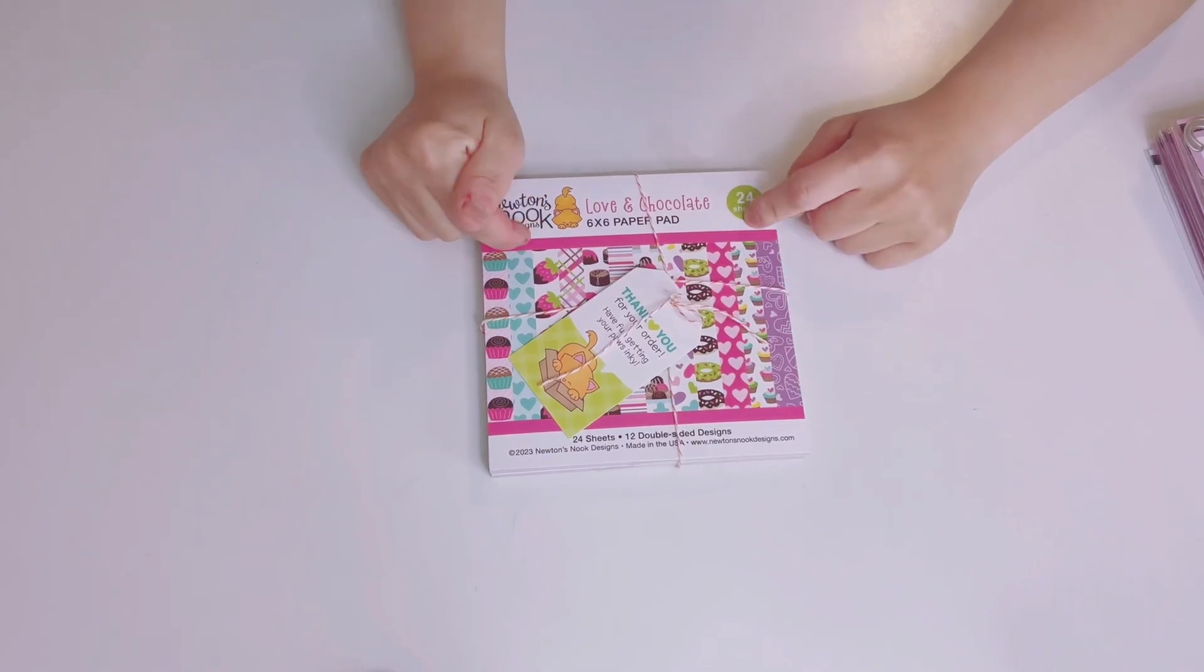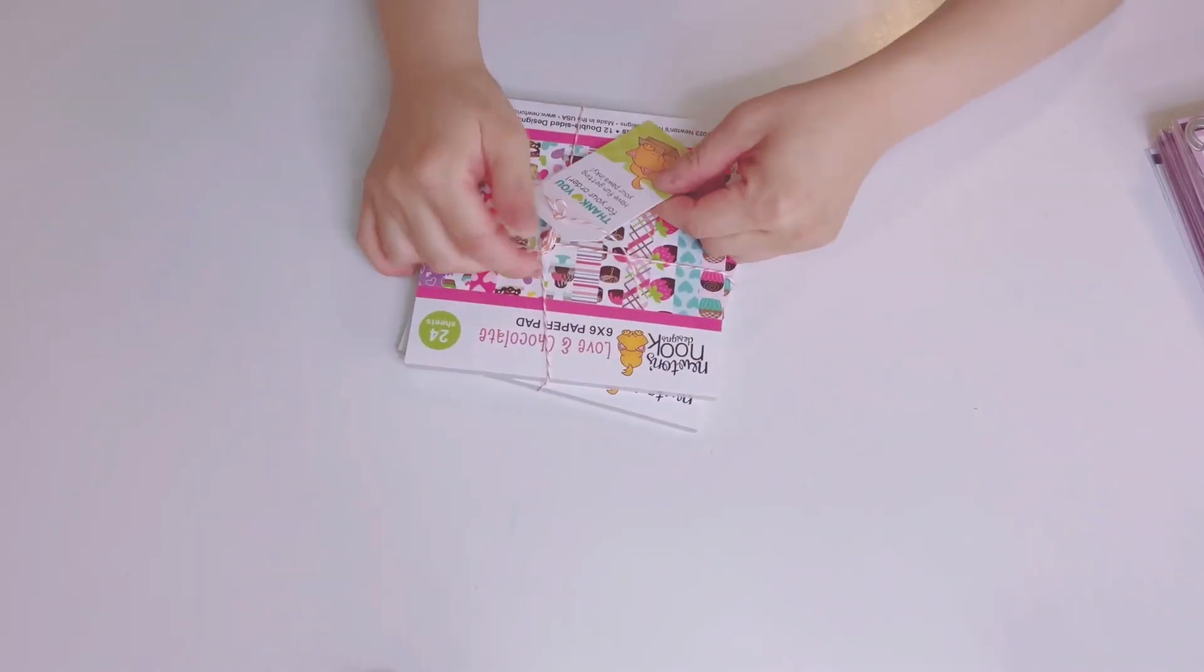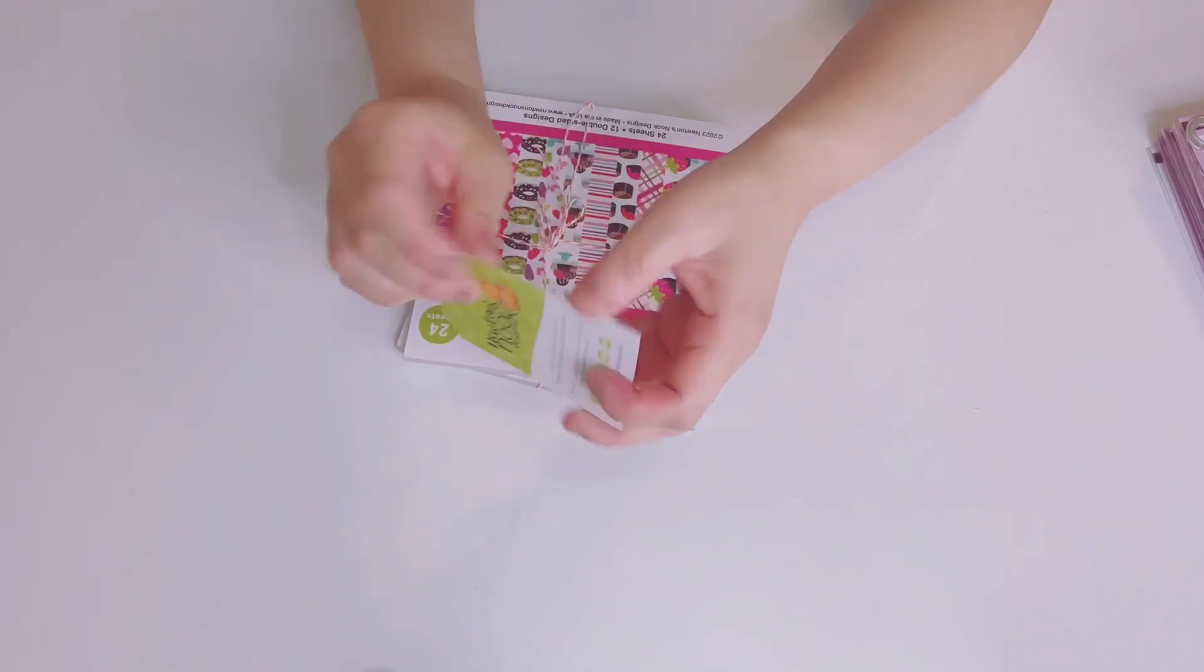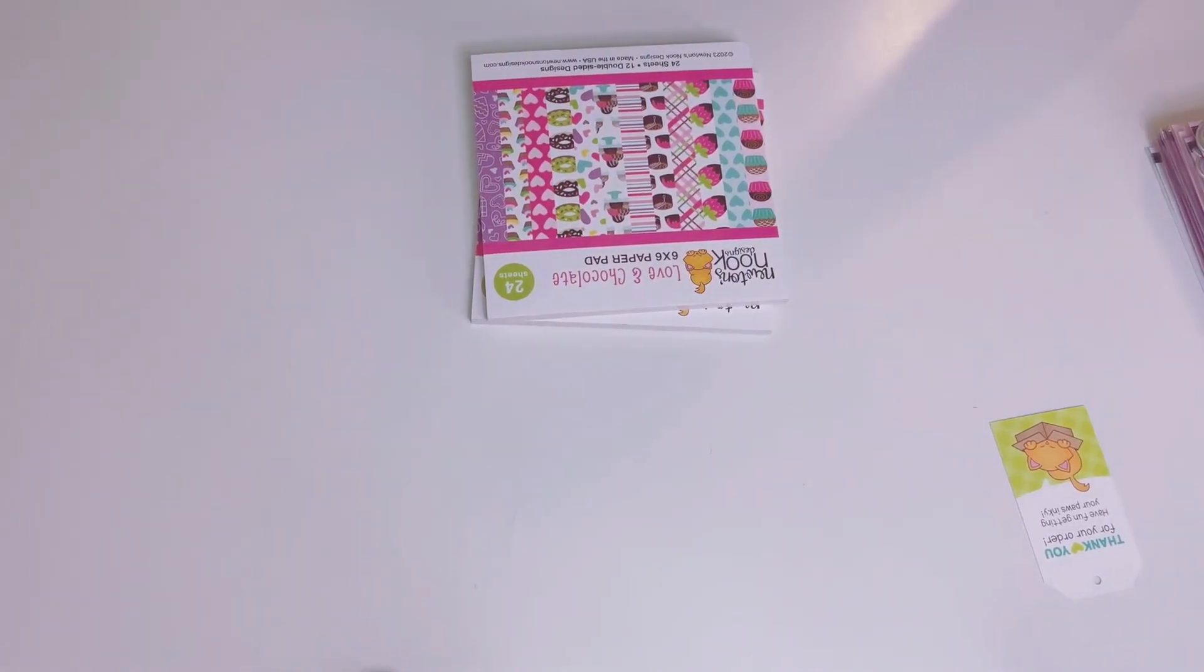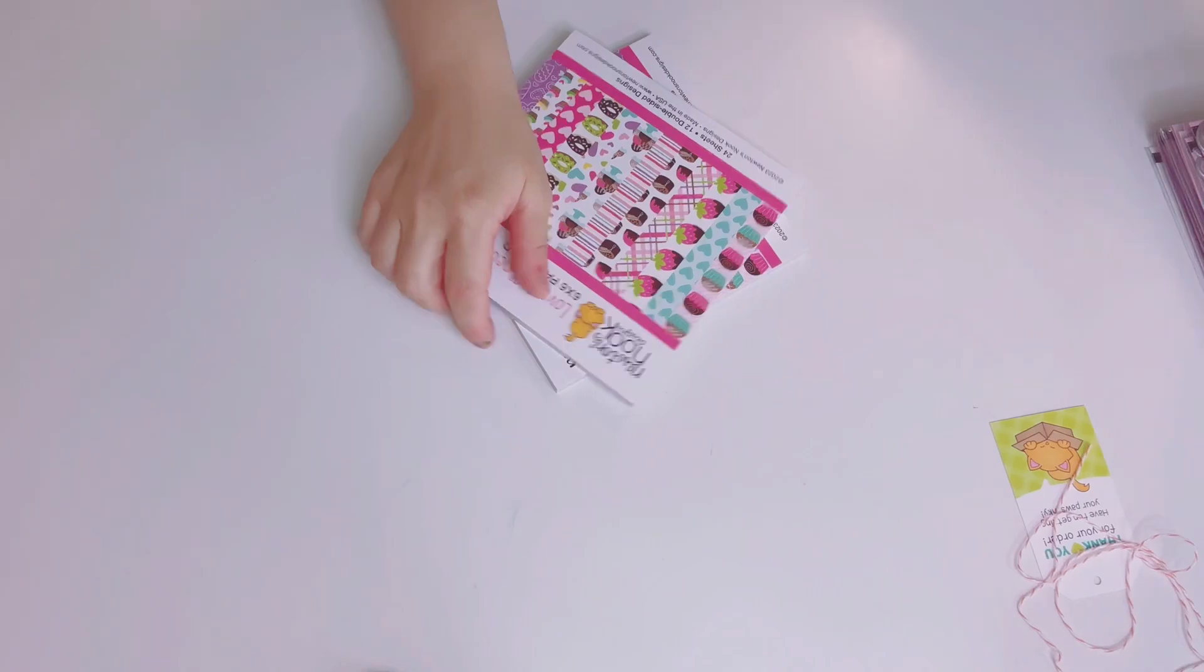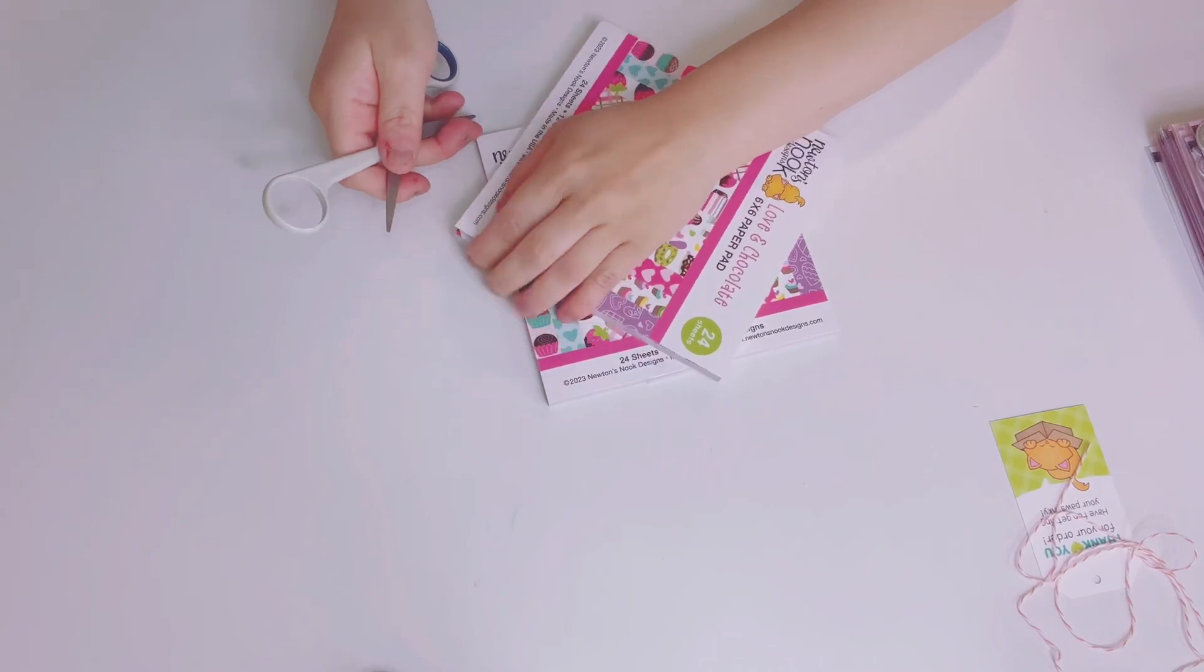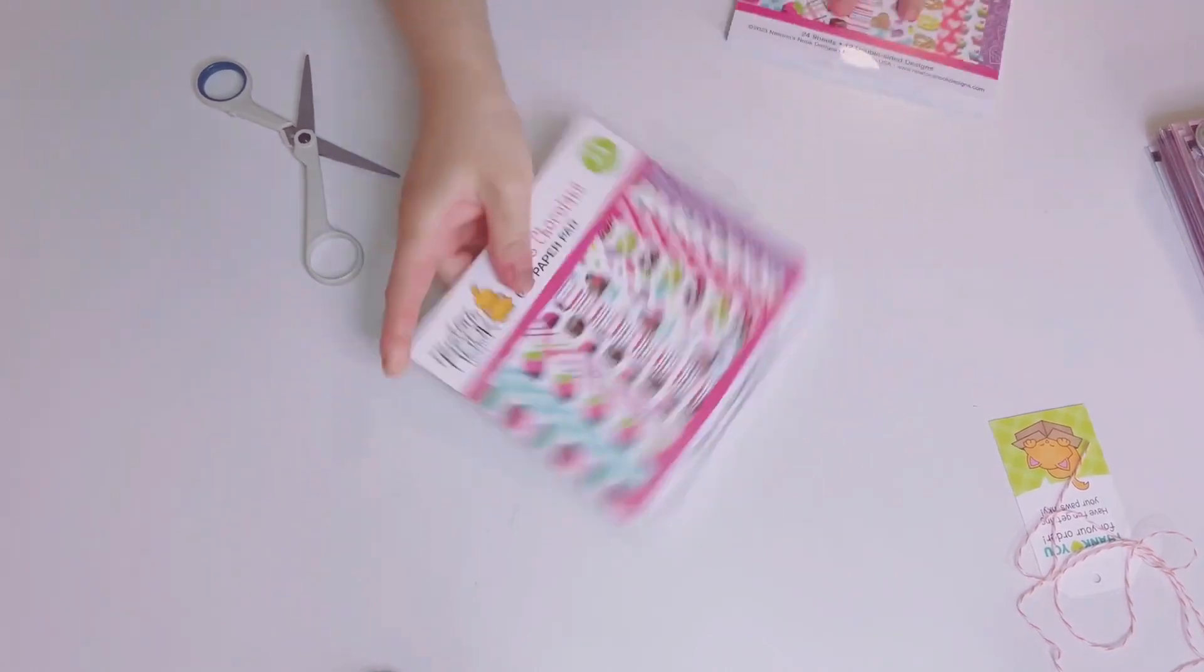But I got two of these paper packs that I thought was so darling. So I'm going to share this one first. It says thank you for your order, have fun getting your paws inky. Such a cute tag, and then on the back has their information. Cute, cute collections. So I got two of the same paper packs. This one is called Love and Chocolate, and it's a 6x6. Each of these have 12 double-sided, 24 sheets. So I'm excited to share.